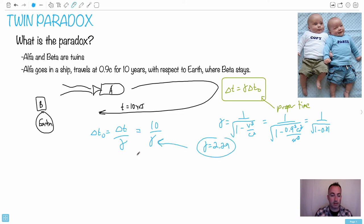So what do I do? I'll put that into here. So finally, I get Delta T0 is 10 over 2.29. Let me just do that. 10 divided by the answer, I end up with an answer of 4.35 years.